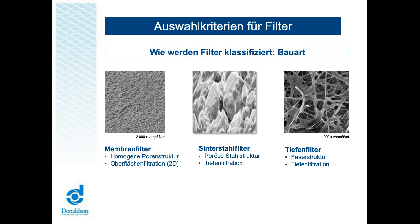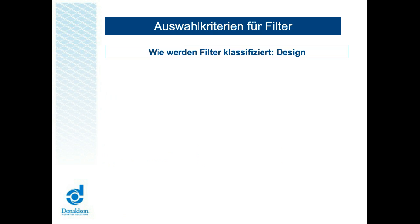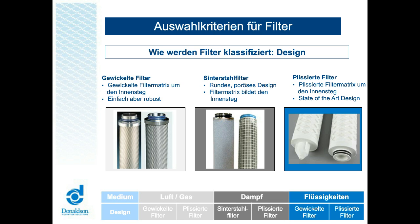Verbindet man dies mit der Klassifikation der Fluide, so werden Tiefen- und Membranfilter hauptsächlich für Luft- und Flüssigkeitsanwendungen eingesetzt, während gesinterte Materialien für die Dampffiltration verwendet werden. Dies führt uns zum Thema des Filteraufbaus. Hierbei unterscheiden wir in erster Linie zwischen gewickelten, schmelzgeblasenen, gesinterten und plissierten Filtern. Auf die Anwendung bezogen bedeutet dies, dass in Luft- und Gasanwendungen gewickeltes und plissiertes Material häufig zum Einsatz kommt, während bei der Dampffiltration Edelstahlmaterialien und bei Flüssigkeiten schmelzgeblasene oder plissierte Konfigurationen genutzt werden.